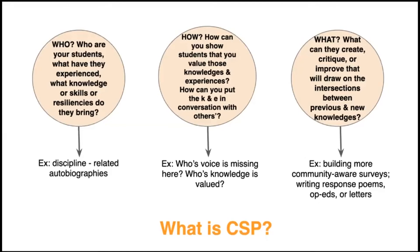The third piece is: what can students create? Having asked those questions, having thought about their own experience, having put that in relationship to other sorts of experiences and knowledges — what can they create, critique, or improve that draws on those intersections? Could they build, based on a previous study that only surveyed college-age white male students, a more community-aware survey that brings their own knowledge and understanding of a community into conversation with that previous study?